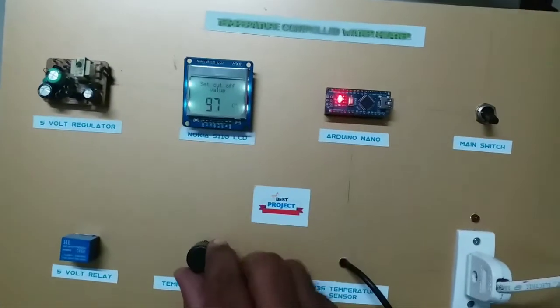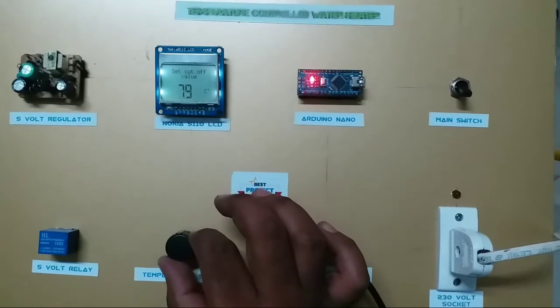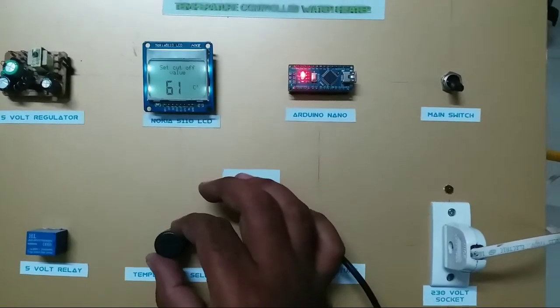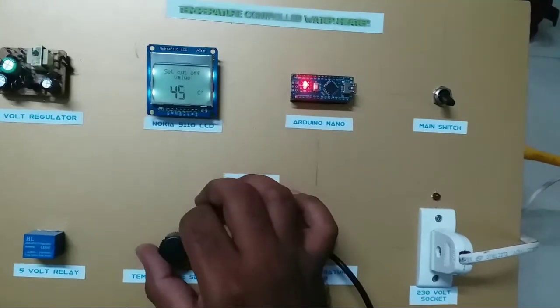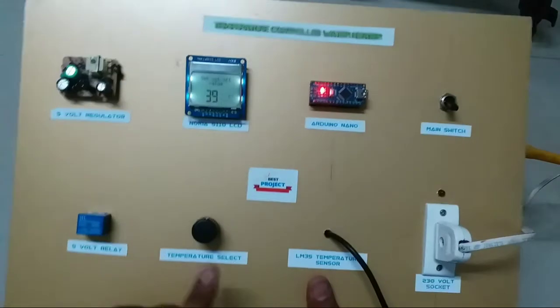Now, we need to set the temperature we want to heat using the circular knob. After setting the temperature value, we will push the knob to turn on the heater operation.